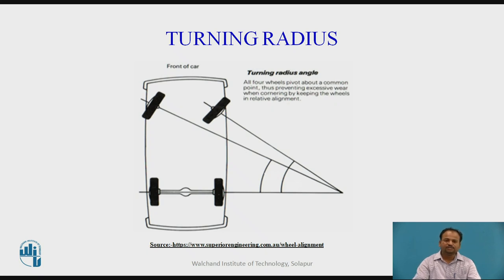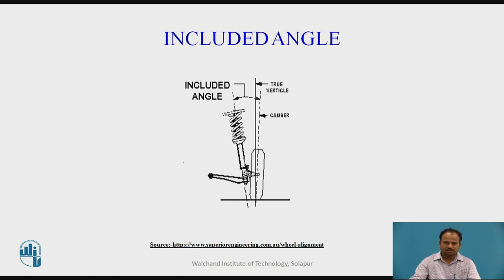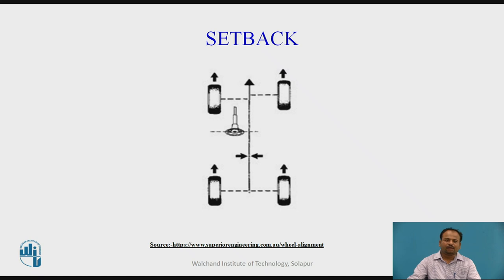The next type is the included angle. The included angle is the sum of the camber angle and steering axis inclination — together they form the included angle. It is not an adjustable angle. However, an improper included angle often indicates a bend in the spindle or strut.